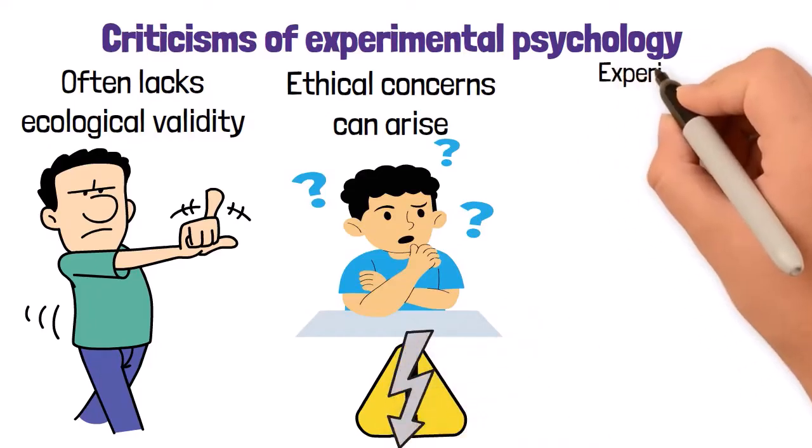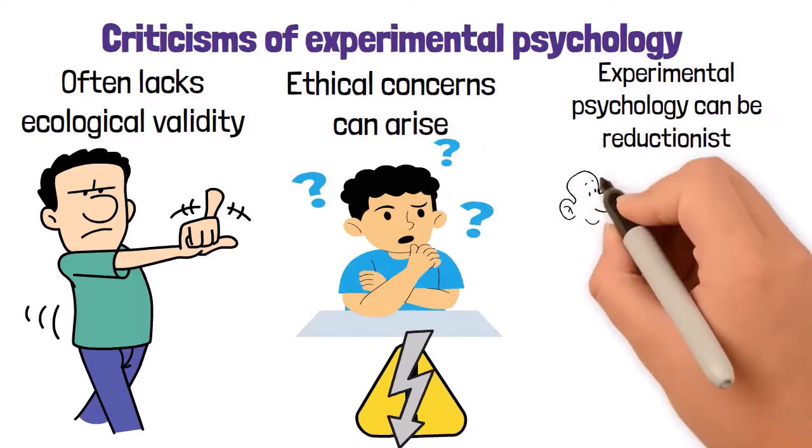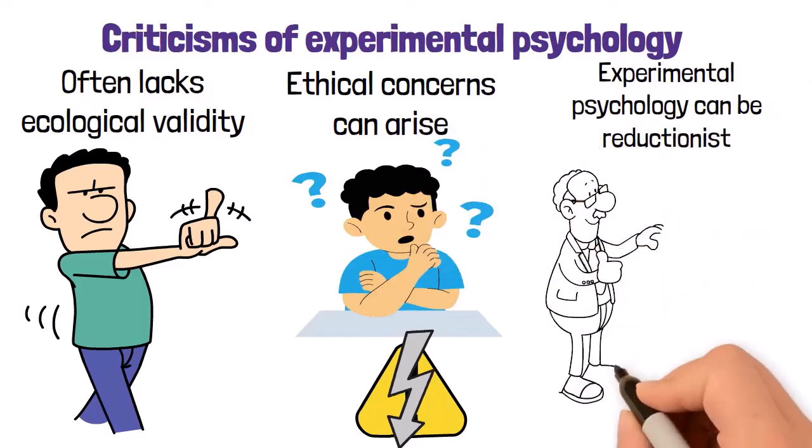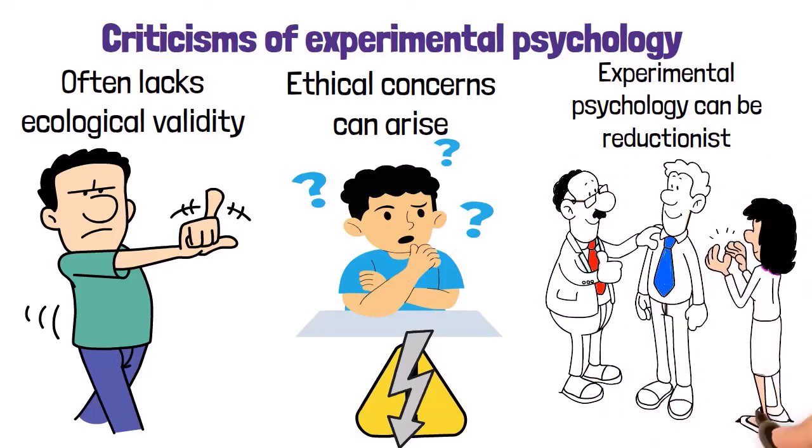Thirdly, experimental psychology can be reductionist. By focusing on specific variables in isolation, it may oversimplify complex human behaviors and overlook broader social and cultural influences.